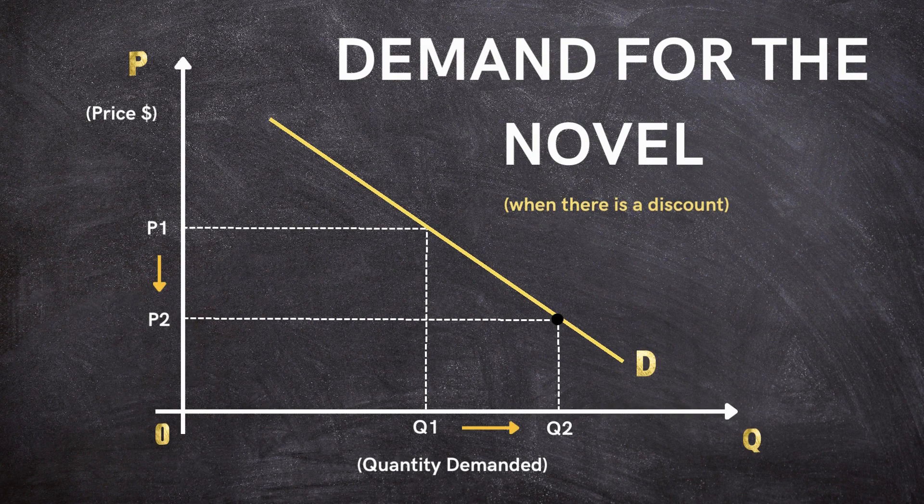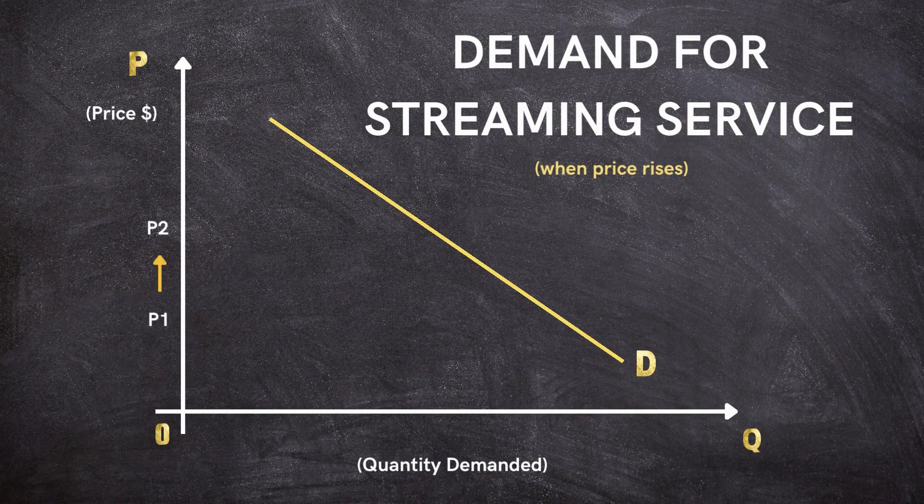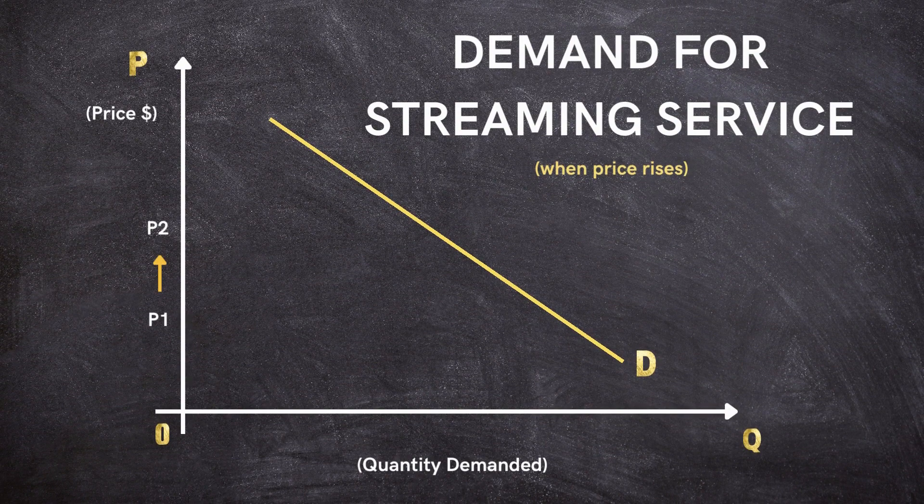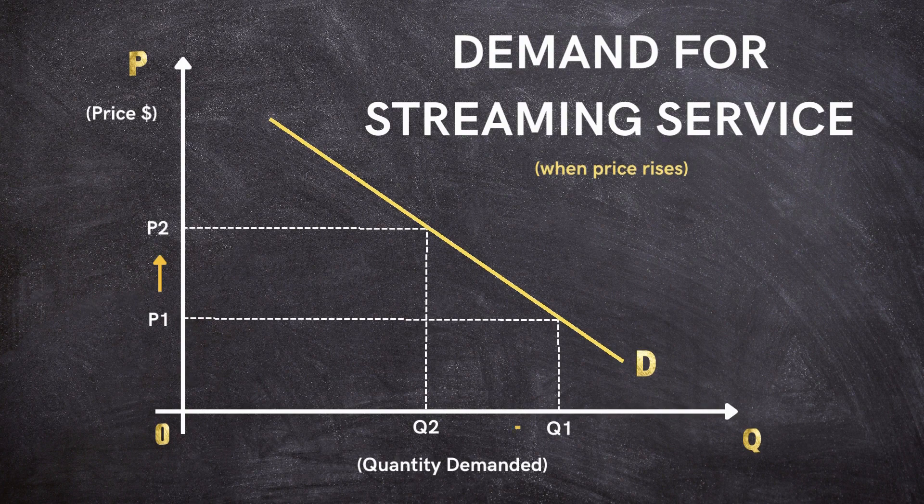Now, envision a situation where the cost of your favorite streaming service spikes suddenly from P1 to P2. You might consider switching to a more budget-friendly alternative or even scaling back your subscription plan. So, the quantity demanded for the product comes down from Q1 to Q2.